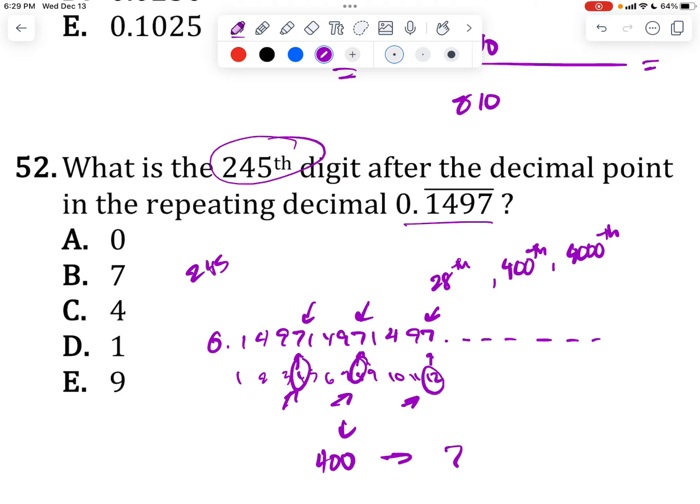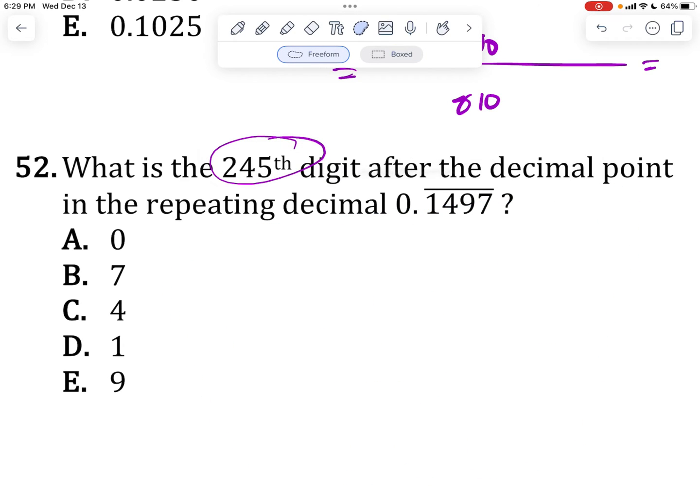Well, check, is 245 divided by 4 divisible by 4? No, it's not. But let's check, for example, 244 maybe? 244 divisible by 4 gives you 61.